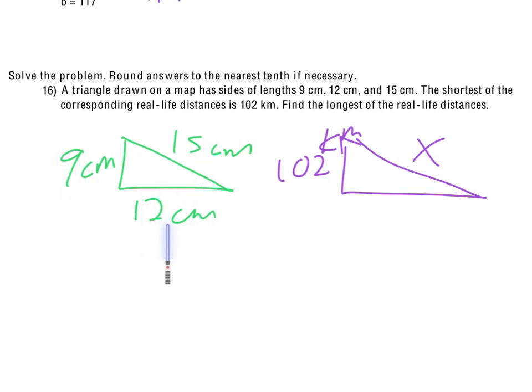Now, the 12 is extra information. I'm not going to be able to use it since I don't have the middle real life distance and I'm not looking for it. Setting up my problem, I still prefer putting my variable I'm trying to find on the top left. I like to keep it over the value from its own triangle. Now, that X, the longest real life distance would correspond to the longest map distance, which is the 15 centimeters. And then the 102 is the shortest, so that would correspond to the 9.